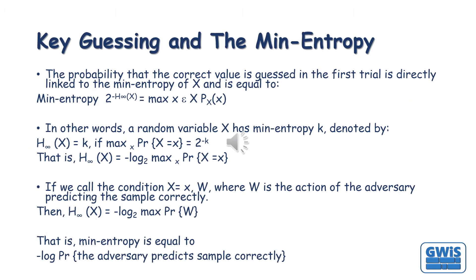The probability that the correct value is guessed in the first trial is directly linked to the min entropy of K0. A random variable K0 has min entropy K, denoted accordingly, if we call the condition K0 equals x as W, where W is the action of the adversary predicting the sample correctly. That is, min entropy is equal to negative log of the probability that the adversary predicts the sample correctly.